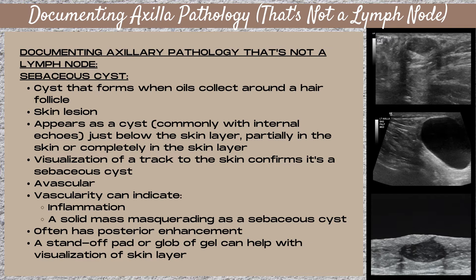A sebaceous cyst is a skin lesion and it's a cyst that forms when oils collect around a hair follicle. It appears on the ultrasound as a cyst — a fluid collection — and commonly will have internal echoes inside. It will be located either just below the skin layer, partially in the skin layer, or completely in the skin layer. The hallmark feature we're looking for on the ultrasound is a track to the skin, which in the bottom image is the thin black line located anterior to the cyst. This is actually the track of the hair follicle. Visualizing this track to the skin confirms that it's a sebaceous cyst.